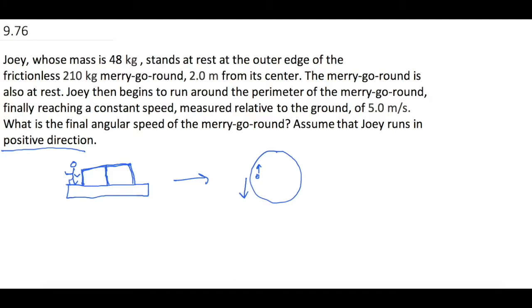All right, so let's go ahead and write down our list of what we know. We have our picture. We know what's going on. So Joey's mass, I'll use a little m for Joey. He is 48 kilograms. And he is standing 2 meters from the edge. And I'm going to use a big M for the merry-go-round. And the merry-go-round is 210 kilograms, and that also has a radius of 2 meters.